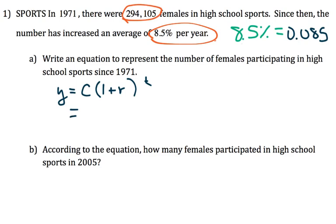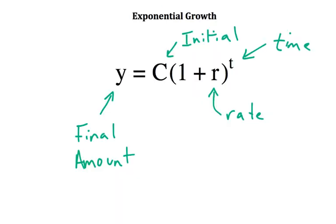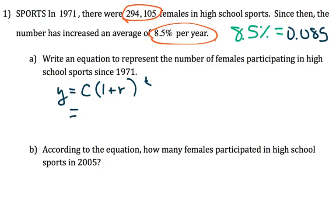I'm going to bring my equal sign down. Do I know what C is? Well, it's the initial amount. Do we know how many we began with? The initial value is 294,105. Now we move on to 1 plus r, which is a decimal, 0.085.